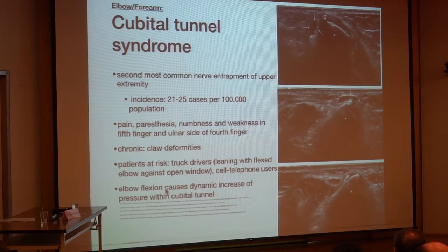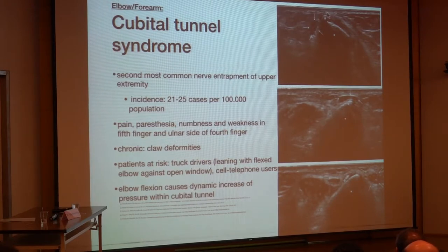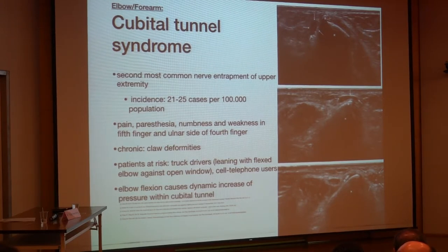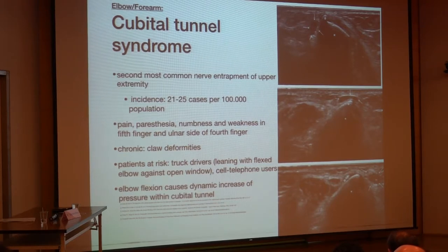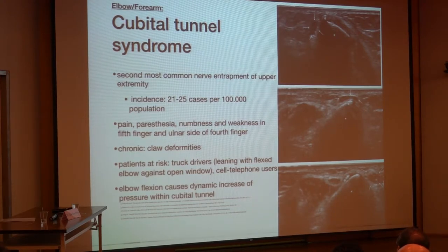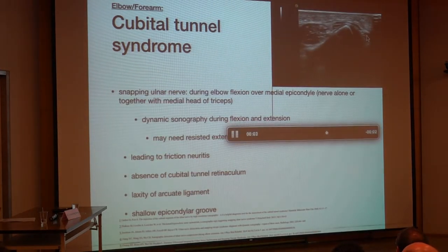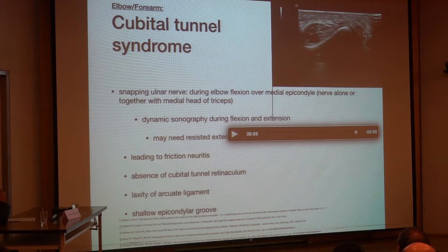Therefore, when examining the ulnar nerve in the cubital tunnel, we should use both extended and flexed positions. We can see the olecranon and close by the ulnar nerve, along with an osteophyte. When the nerve goes over the osteophyte, there is a tendency for subluxation, and the osteophyte can irritate the nerve considerably. Here we can see the nerve snapping over the olecranon and the osteophyte, with the nerve ending up completely at a different location — it should be medial but snaps toward the lateral side. There may also be a second snap of the medial triceps head.